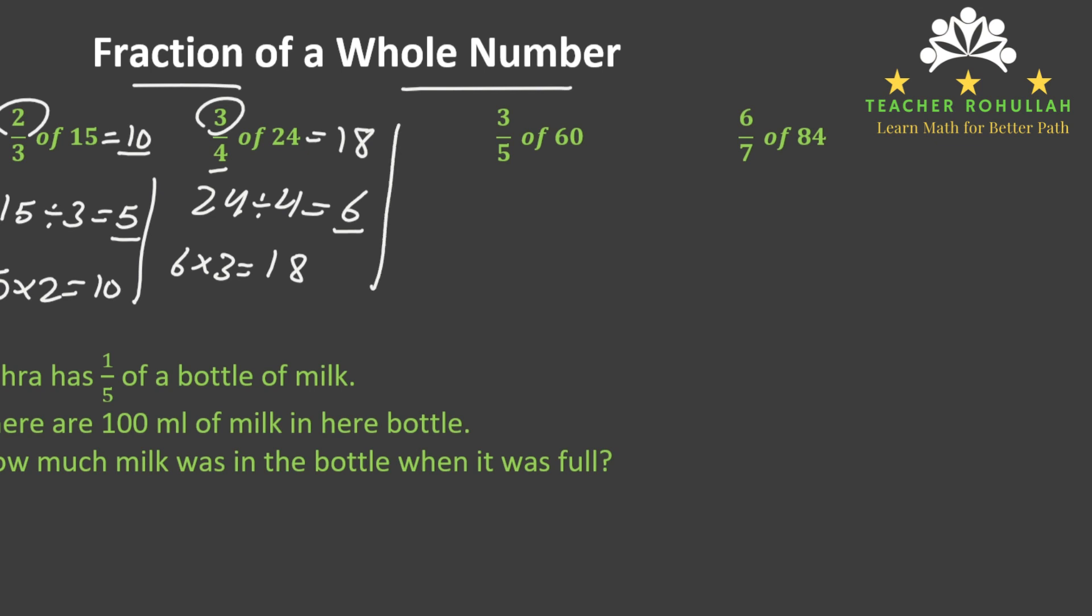The third example is three-fifths of 60. So we follow the same rule. First we divide 60 by 5 and then multiply the result with 3. 60 divided by 5 is 12. Because 12 times 5 is 60. 5 times 2 is 10 and 1 times 5 is 5. 5 plus the 1 from the 10 is 60. And 12 times 3 is equal to 36.